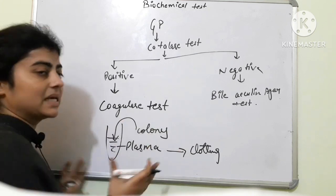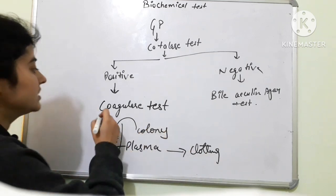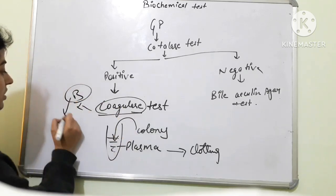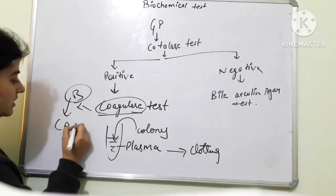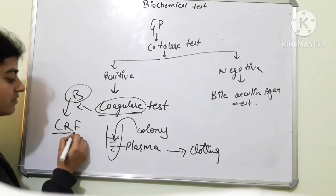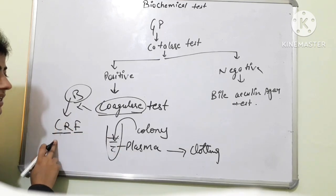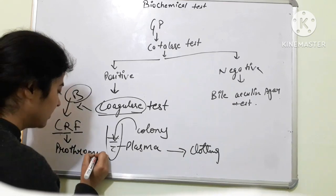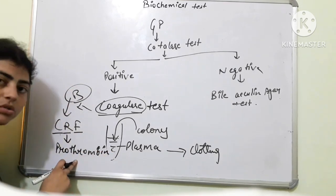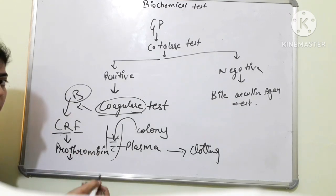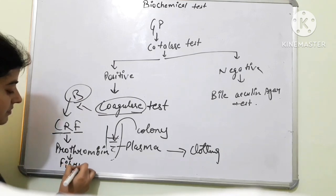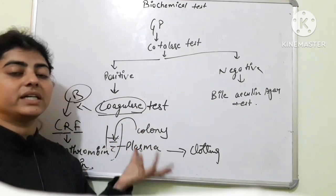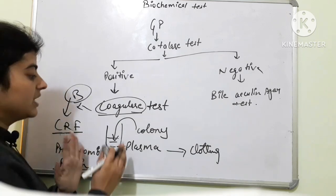The mechanism behind this clotting is: the coagulase enzyme present in the bacteria reacts with the Coagulase Reacting Factor (CRF) present in plasma, which activates prothrombin. This prothrombin further activates fibrinogen and converts fibrinogen into fibrin, forming the clot. The coagulase test is the confirmatory test for Staphylococcus aureus — if it is positive (clot formation), it is confirmed that the bacteria is Staphylococcus aureus.